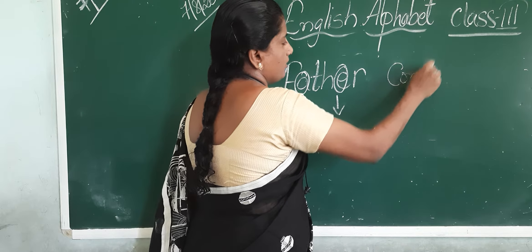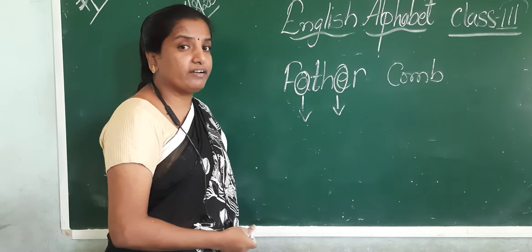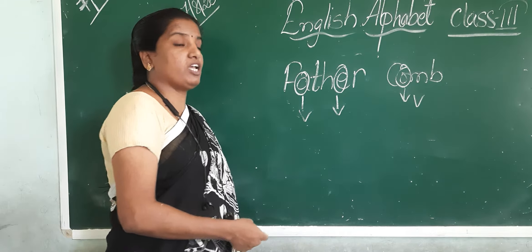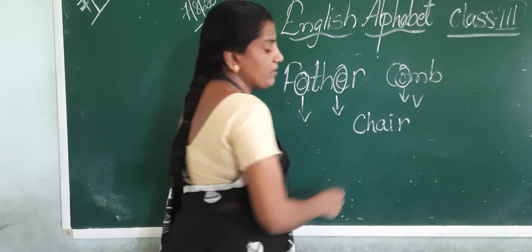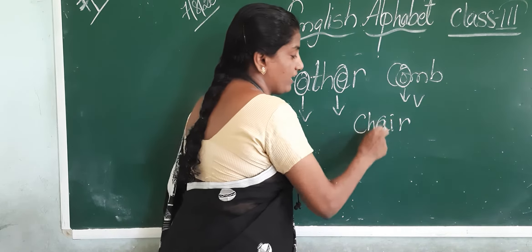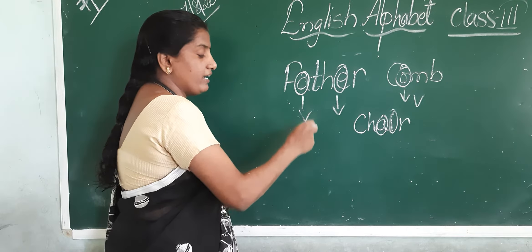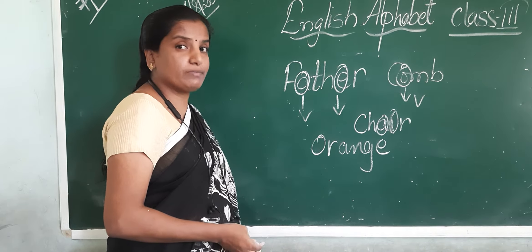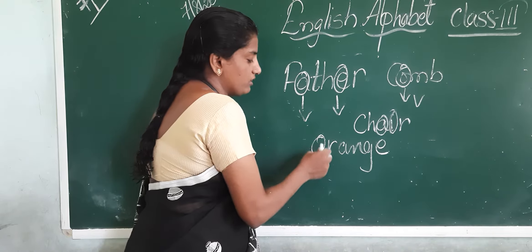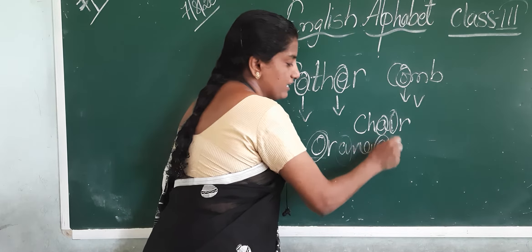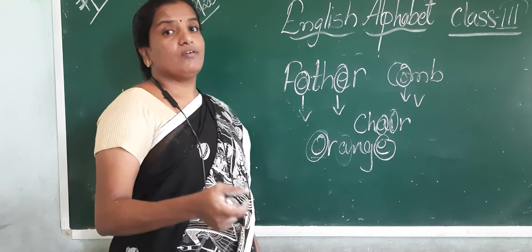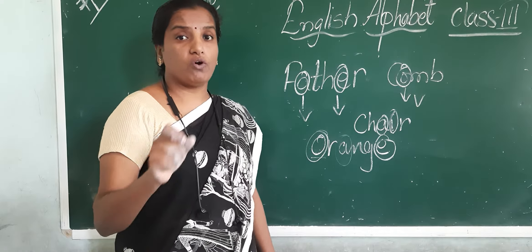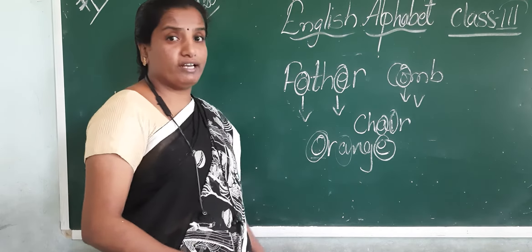Let us take another — 'come.' What are the vowels given to you, children? O. Again we have a vowel in the word. Let us take another — 'change.' Here again two vowels: A and I. And 'orange' — again vowels have been used: O, A, and E. No word is formed without the vowel.